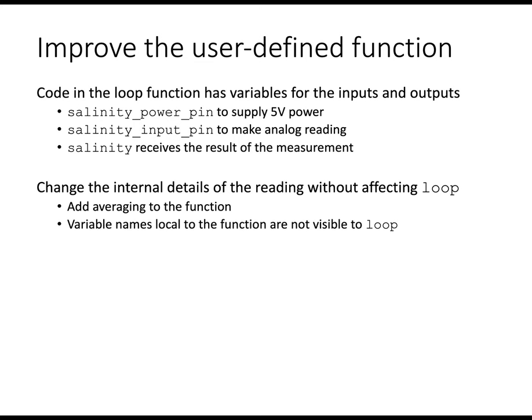Now we're going to improve that function. We're going to make it more useful by creating an average instead of just a single reading. But before we do that, we're going to look into the averaging calculations themselves. So think about how we can isolate this work. Salinity power pin and salinity input pin are known internal to the loop function. The salinity variable receives that result. How the user defined function does its work is not directly important as long as the values are returned in the appropriate type, namely ints or floats, and that the input values are specified in the appropriate order. We can change the internal details of the reading without affecting the loop.